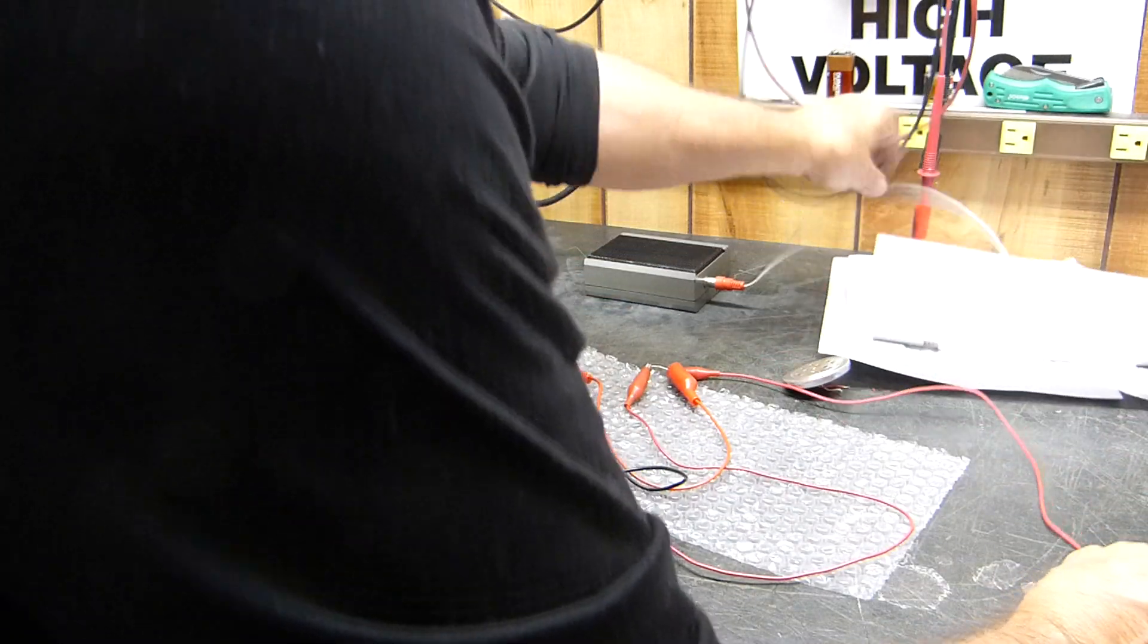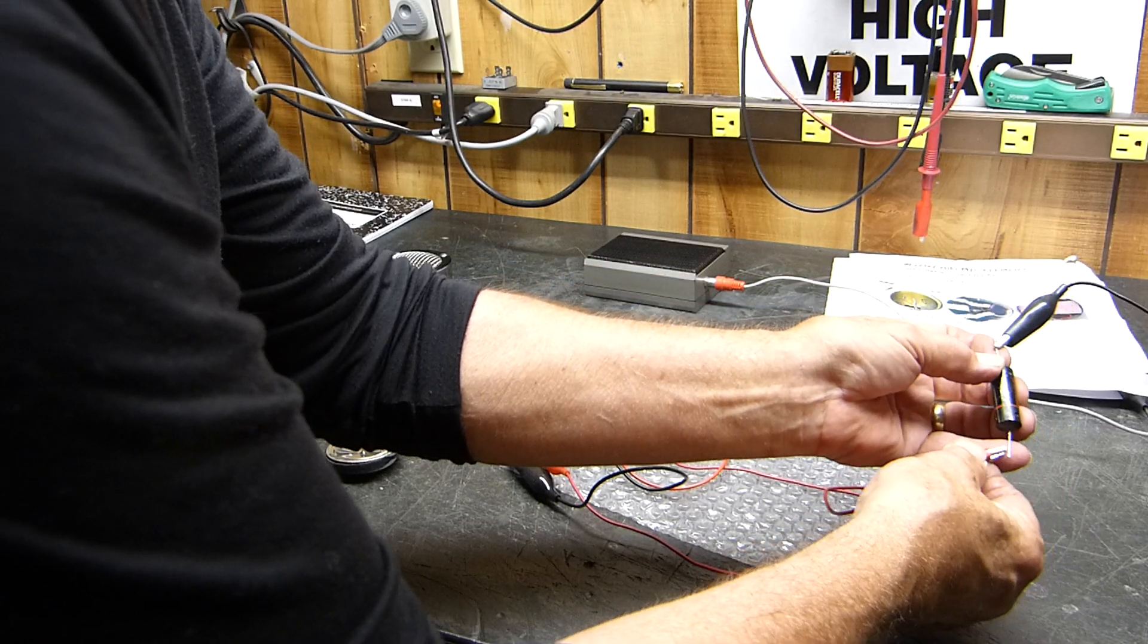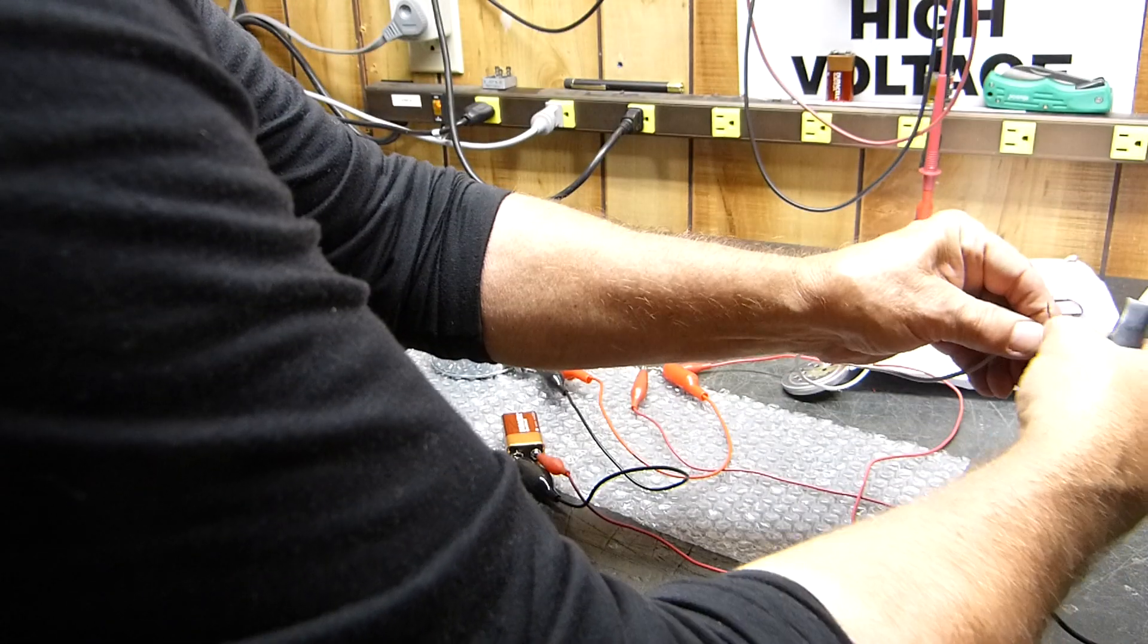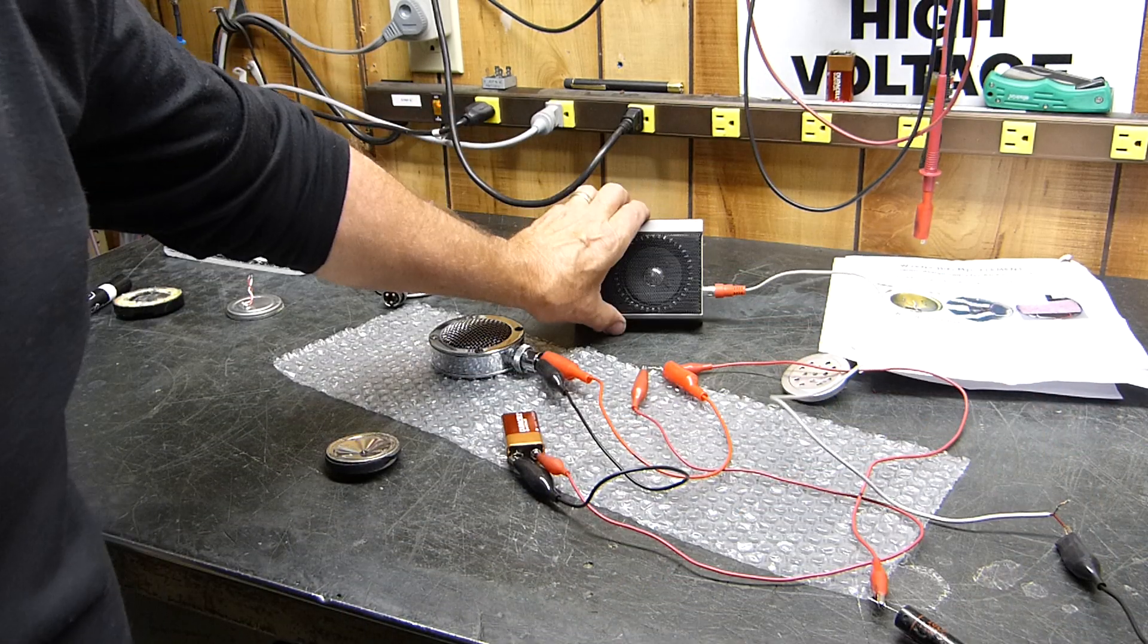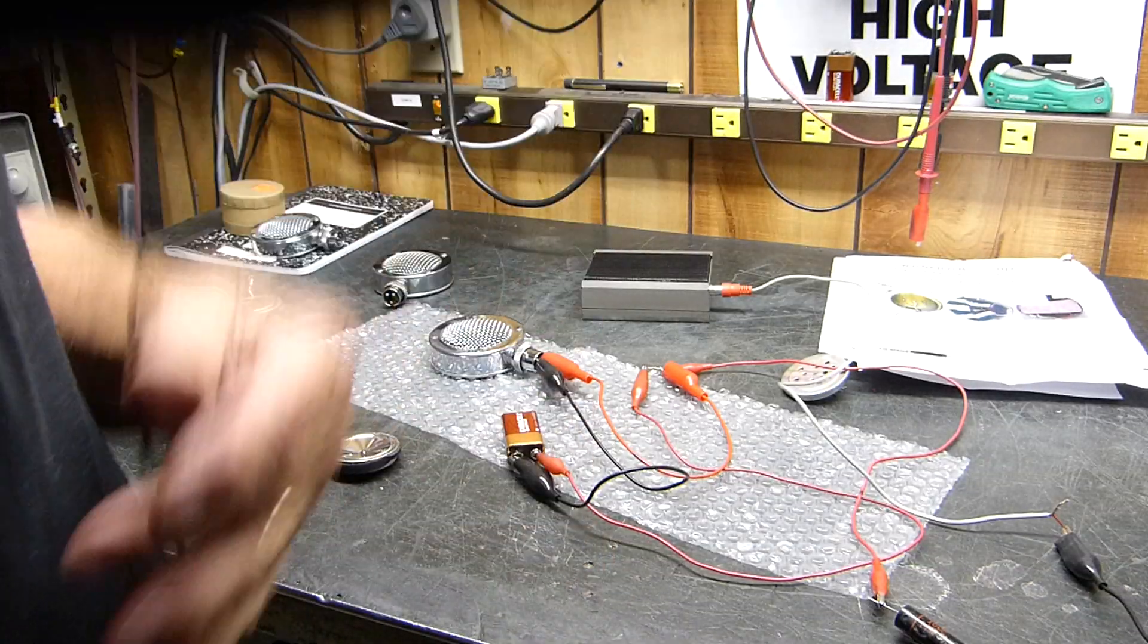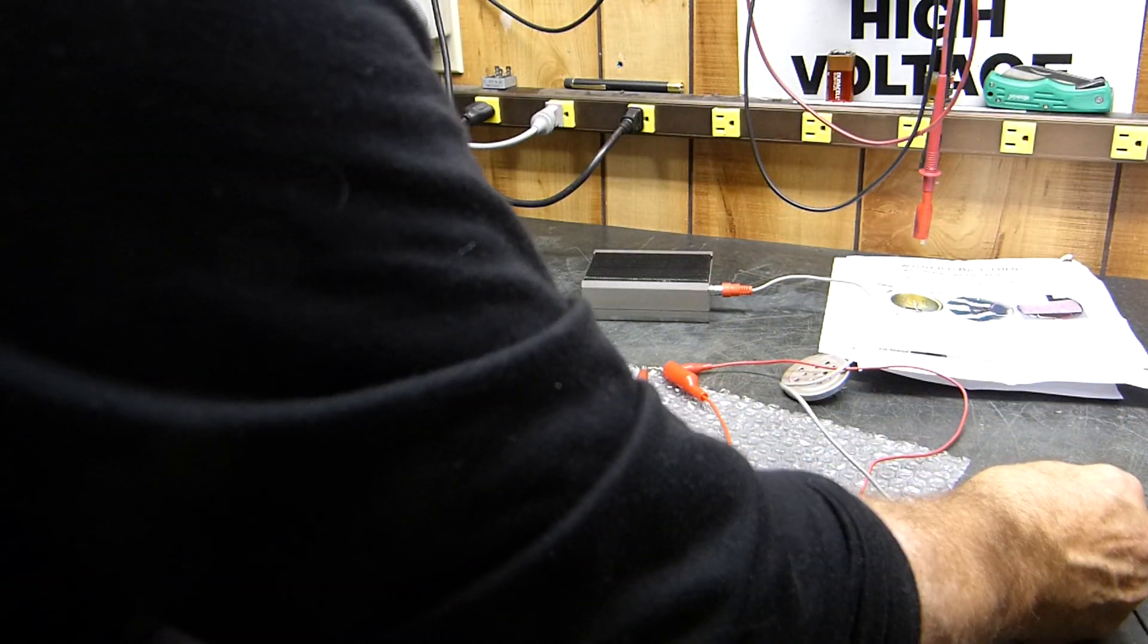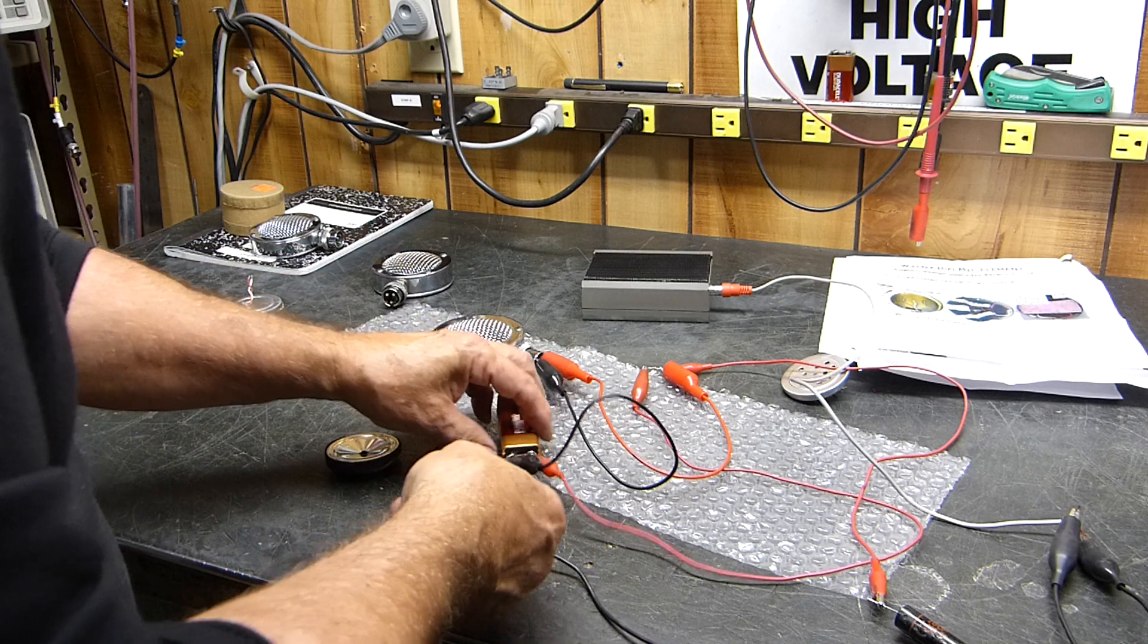We're going to put our positive side to the capacitor, and then we're going to hook it to the positive side of our little amplifier. The negative side goes right back to the negative side of everything. You can see there's a lot of amplification there.